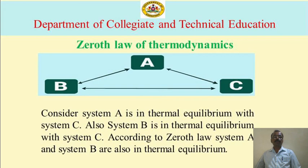In the figure, consider systems A, B, and C. System A is in thermal equilibrium with system C. Also, system B is in thermal equilibrium with system C. According to the 0th law of thermodynamics, system A and system B are also in thermal equilibrium with each other.